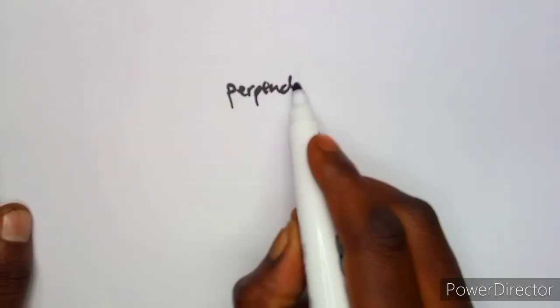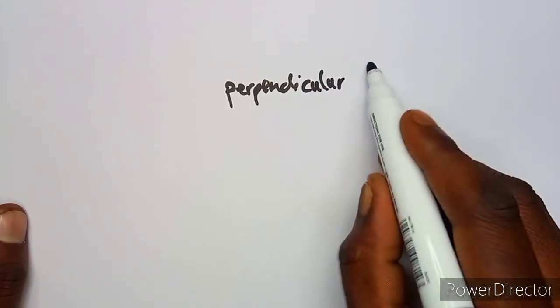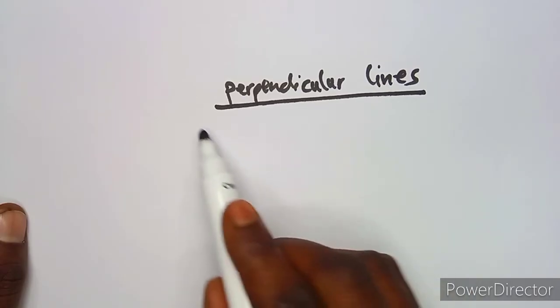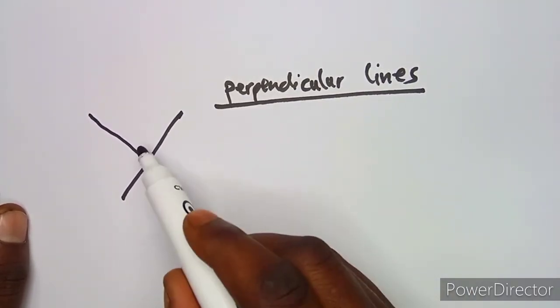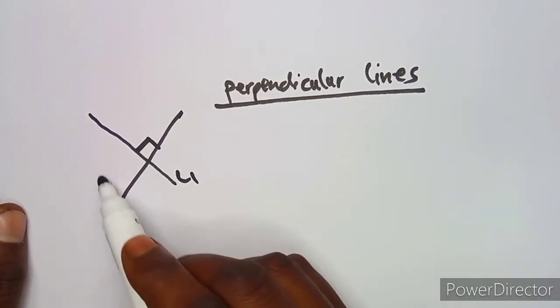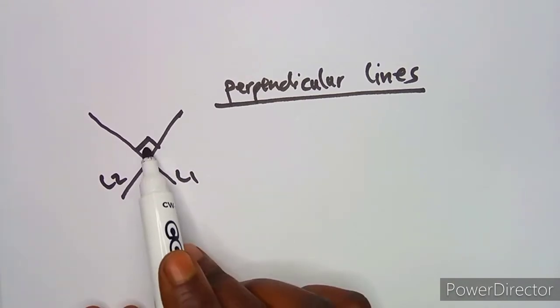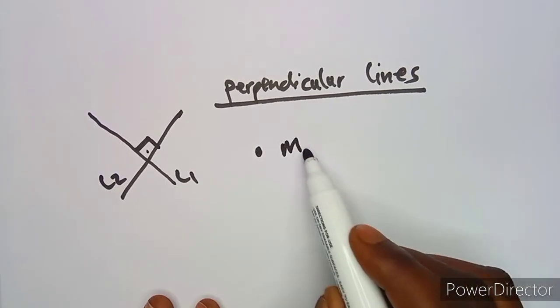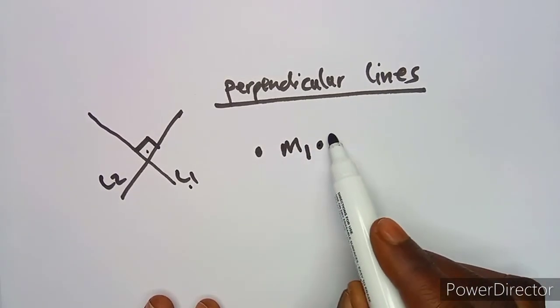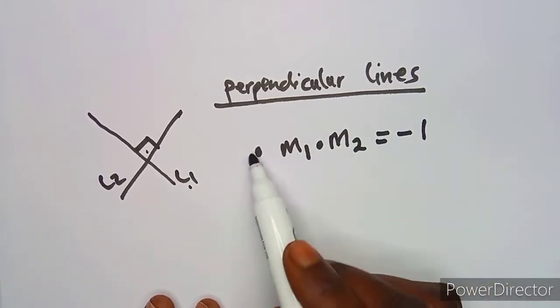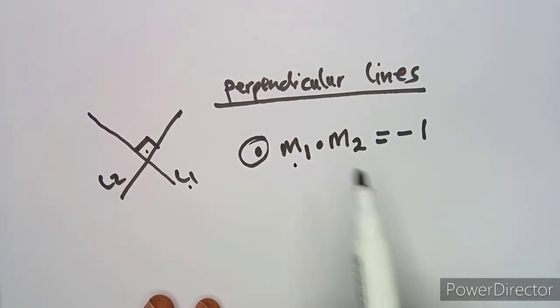Perpendicular lines are lines that meet at 90 degrees. For perpendicular lines, the product of the gradients of the two lines equals minus one: m1 × m2 = -1. So if you multiply the gradient of the first line by the gradient of the second line and get negative one, the lines are perpendicular.